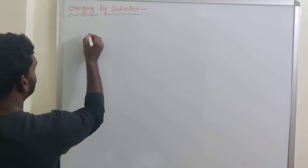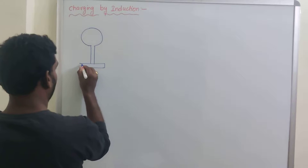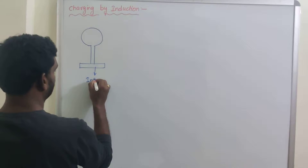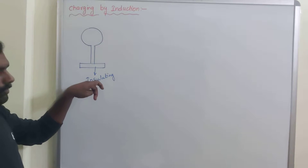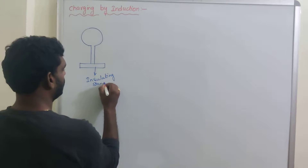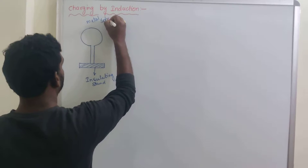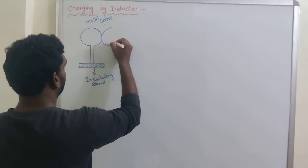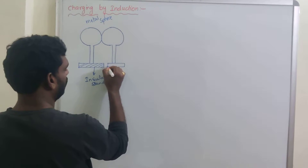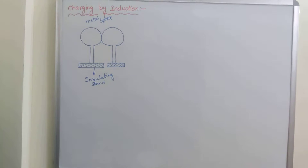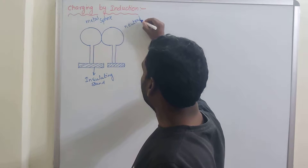For this, I take two metal spheres. These two metal spheres are kept being held with the help of insulating stands. Why should we keep an insulating stand? Because the excess amount of charge will flow into the earth surface if there is no insulating stand. Initially the two metal spheres are neutrally charged.